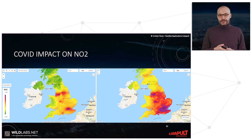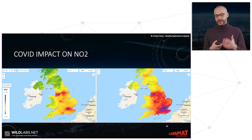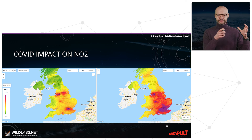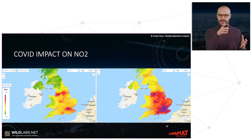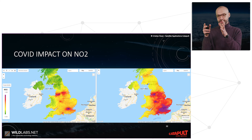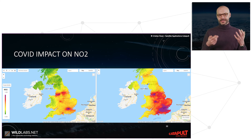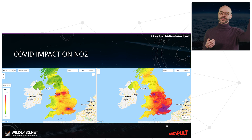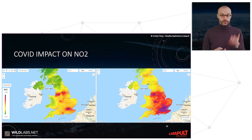We can also see the impact that COVID-19 had on NO2 levels. Looking at an example over the United Kingdom, during the COVID lockdown period in 2020 we had lower levels of NO2, while in the pre-COVID period — shown on the right — there is a much higher level of pollution. In the color scale, green represents a low quantity of NO2 while red or violet represents a high level, and this difference is clearly visible in these images.